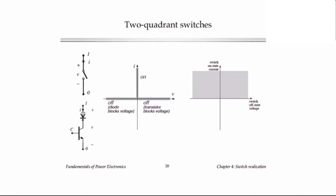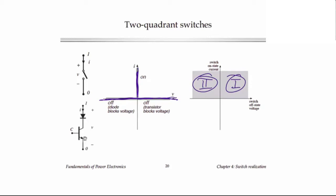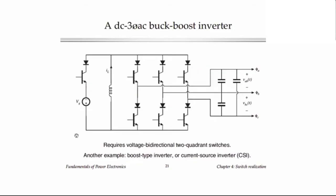Here's our ideal switch. The IV curve of the composite connection of semiconductors shows we can be anywhere on the horizontal axis when the transistor is off, and on the positive vertical axis when the transistor is on. So this switch will work in quadrant 1 and quadrant 2. If you need a voltage bidirectional two-quadrant switch for quadrants 3 and 4, you just connect the transistor and diode in the opposite direction to get it to conduct current in the other direction.